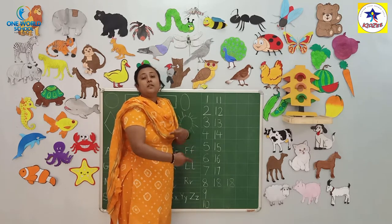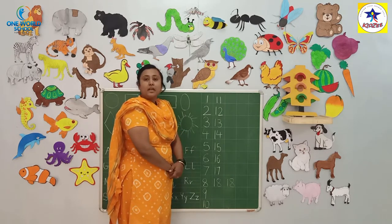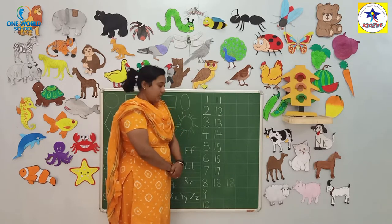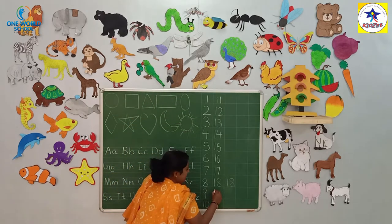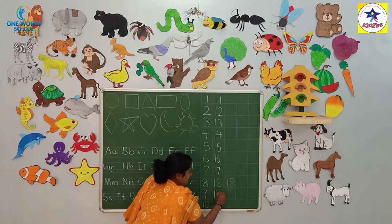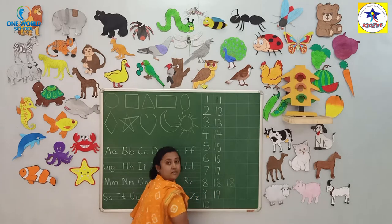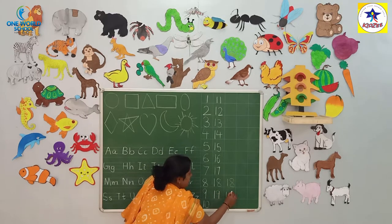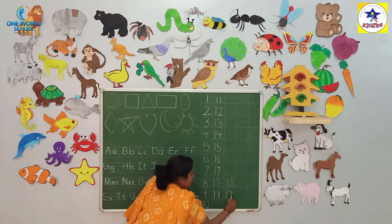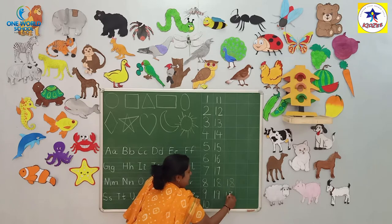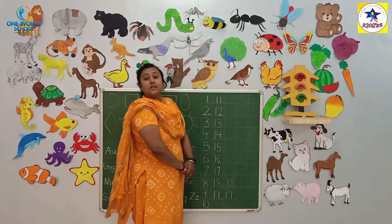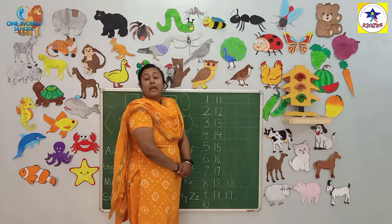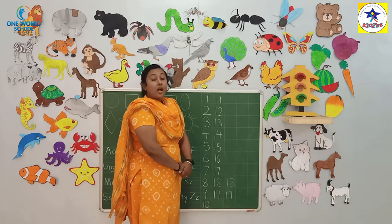अब आपको एक activity करना है। तो 1, 9 — 19 कैसे लिखते है? आपको 1, 9 — 19 कैसे लिखते है। ठीके?